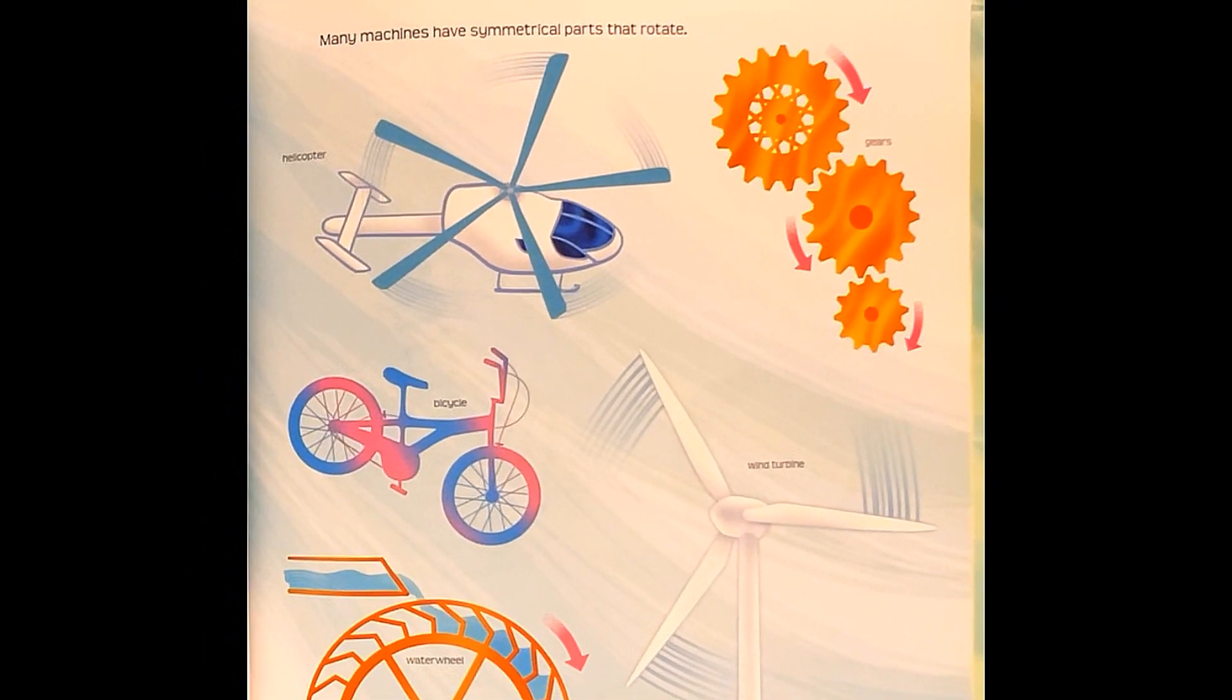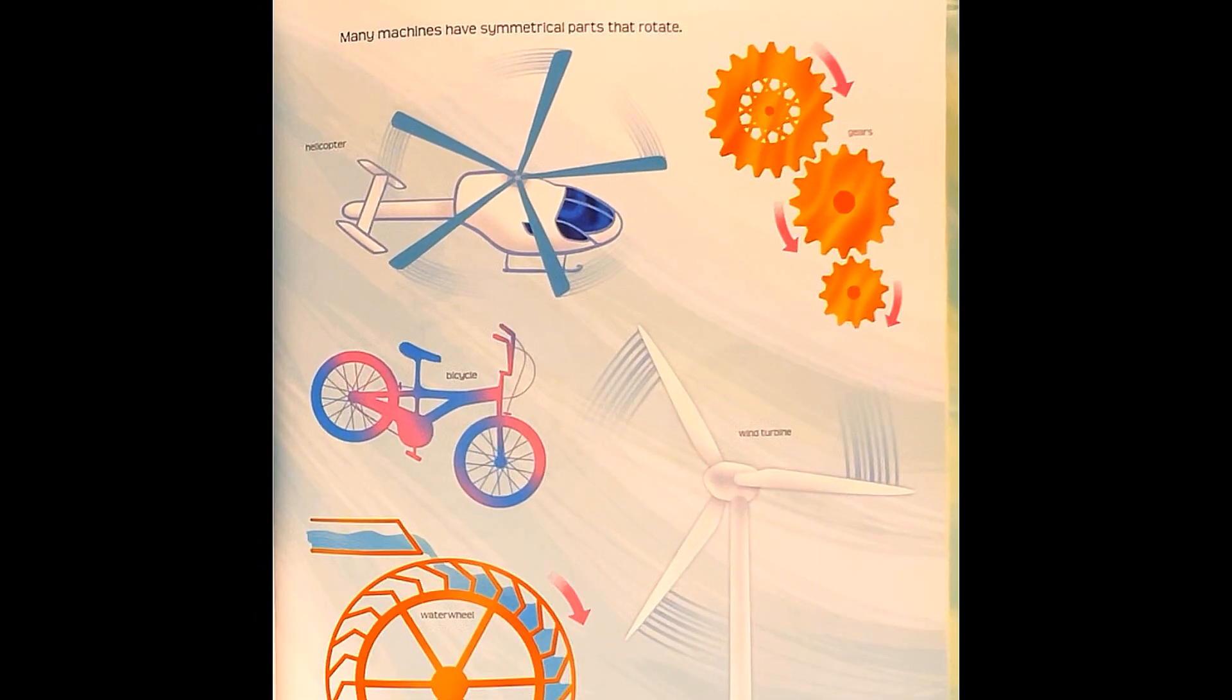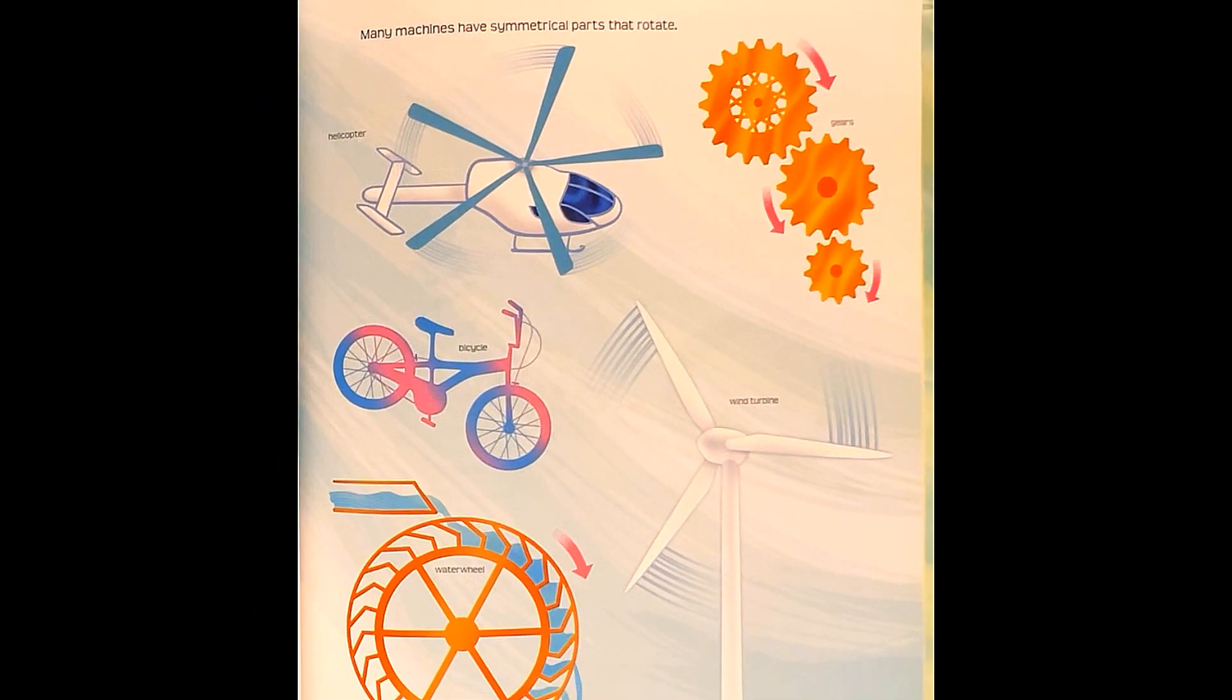Many machines have symmetrical parts that rotate. Helicopter, gears, wind turbine, bicycle, and a water wheel.